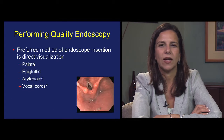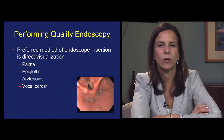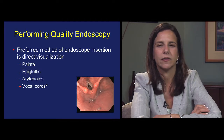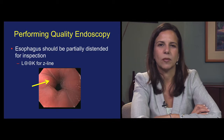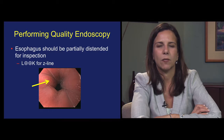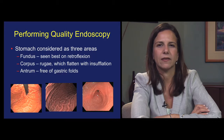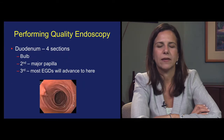The preferred method of endoscope insertion when performing quality endoscopy, with or without endotracheal intubation, is direct visualization of all of the structures in the pharynx, including the palate, epiglottis, arytenoids, and vocal cords. The esophagus should be partially distended to look for abnormalities and also identify anatomic landmarks, such as the Z-line. The stomach should be considered as three areas: the fundus, corpus, and antrum. Most quality upper endoscopic procedures advance to the third part of the duodenum, past the major papilla, which demarcates the second part.